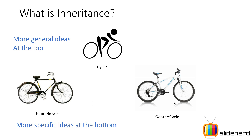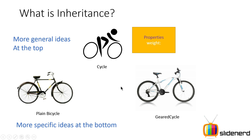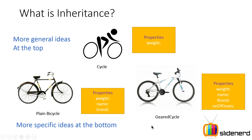In inheritance, you have different classes in your program — some are less specific, like person, and some are more specific, like businessman. More general ideas are at the top and more specific ideas are at the bottom. For example, there is a general class called Cycle with a property like weight, say five or ten kilograms. Then you can have a plain bicycle, which is a special type of cycle with properties like weight, name, and brand.